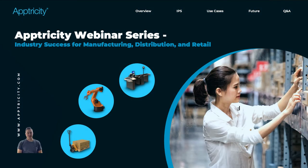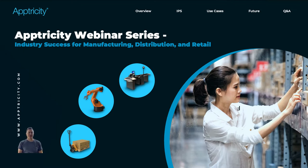Thank you guys for joining us today. This is part three of our four-part electricity webinar series. We've been talking about supply chain tracking technologies as a broad topic. We went over tagging technologies in our first episode. In the previous session, we went through indoor positioning at a very introductory level. In today's session, we decided to get more specific to industries and verticals, going over specific use cases on how IPS can be used for manufacturing, distribution, and retail — the three areas we wanted to focus on.